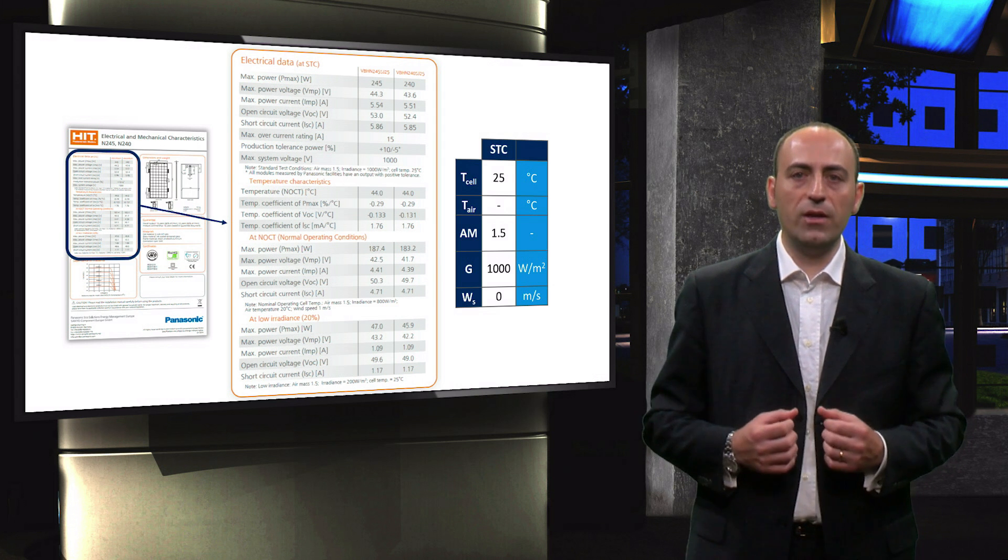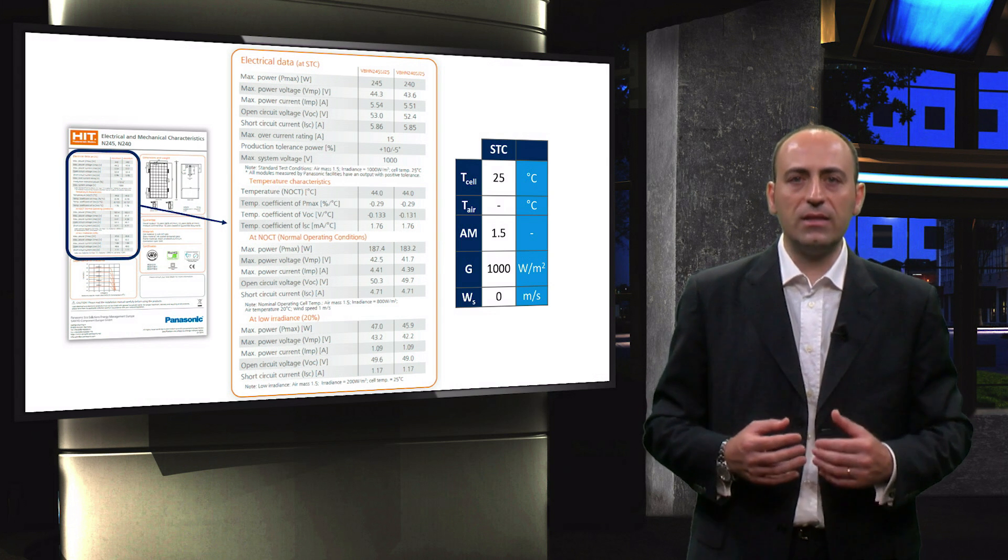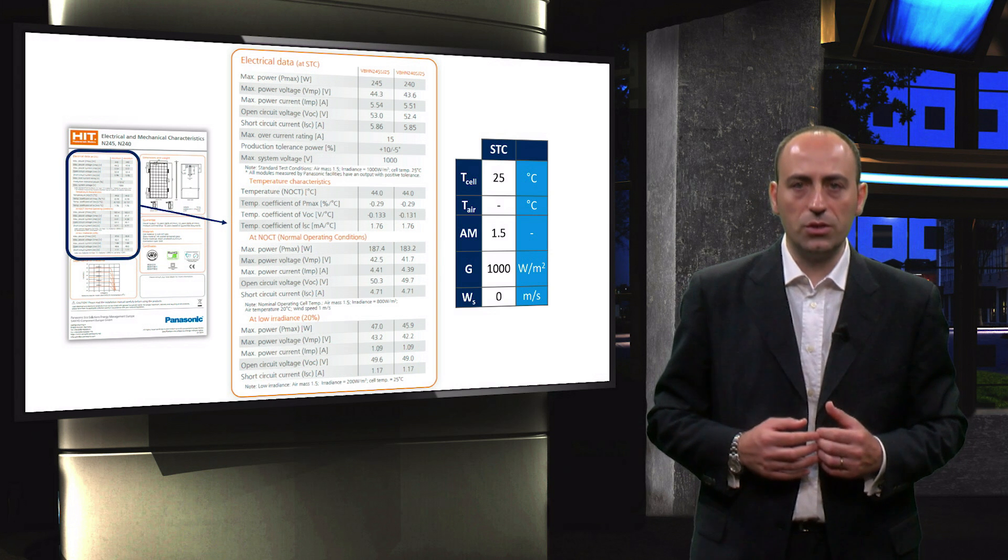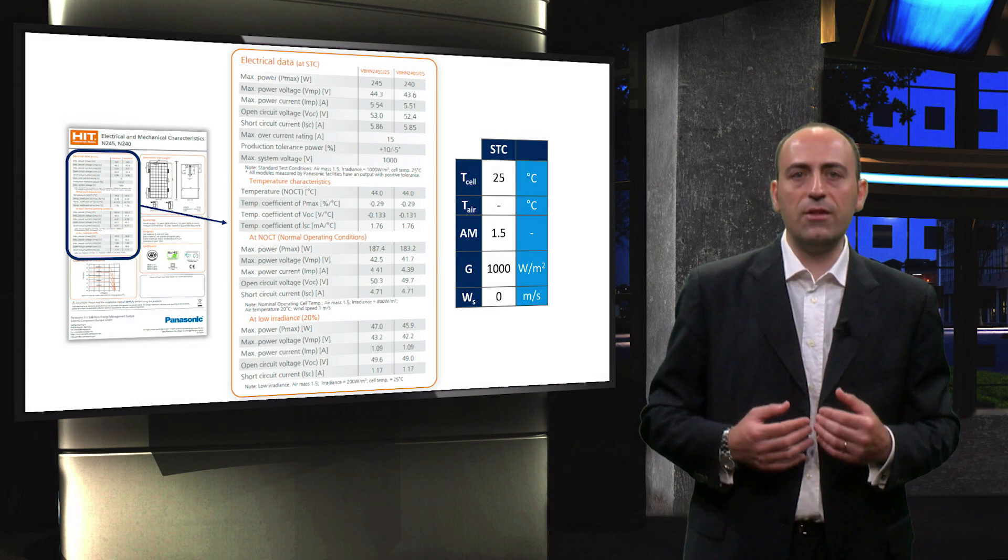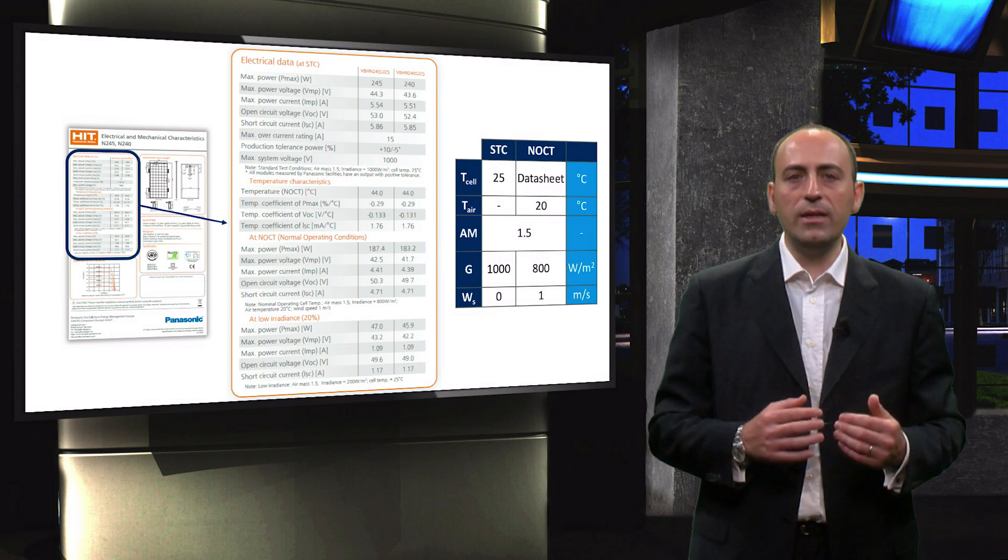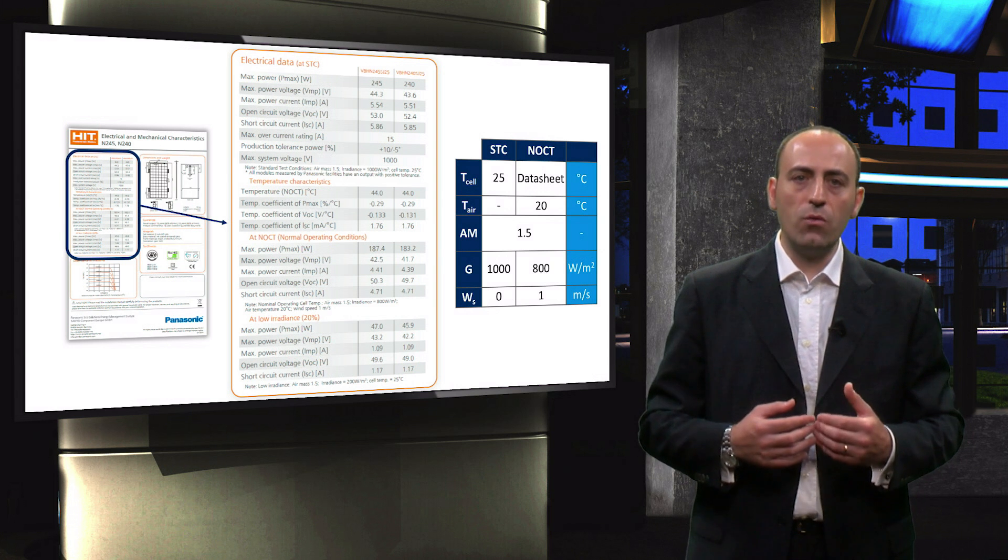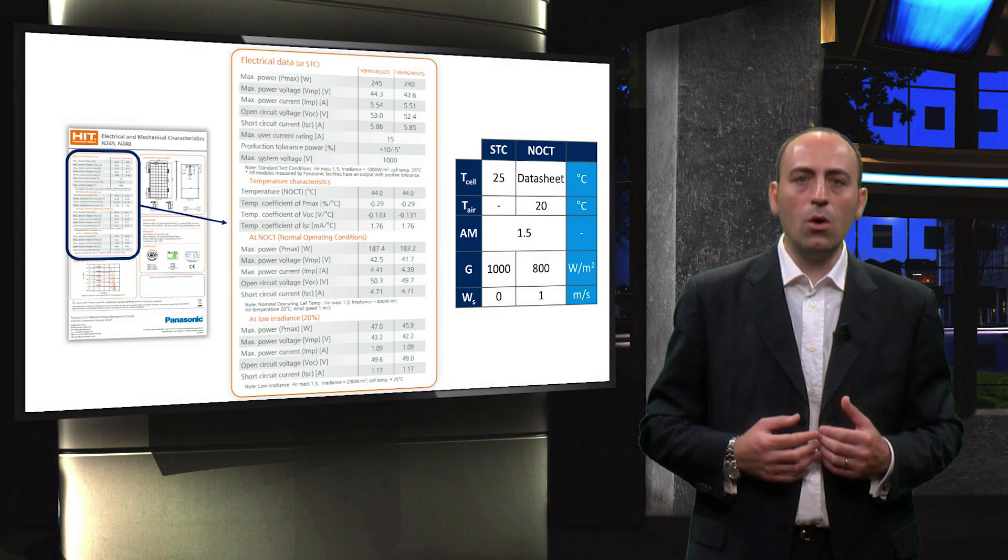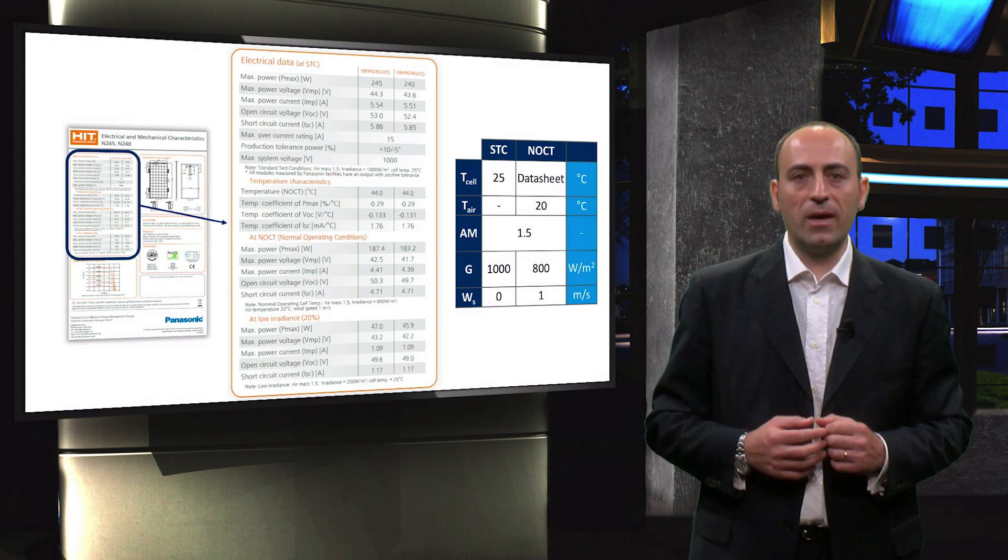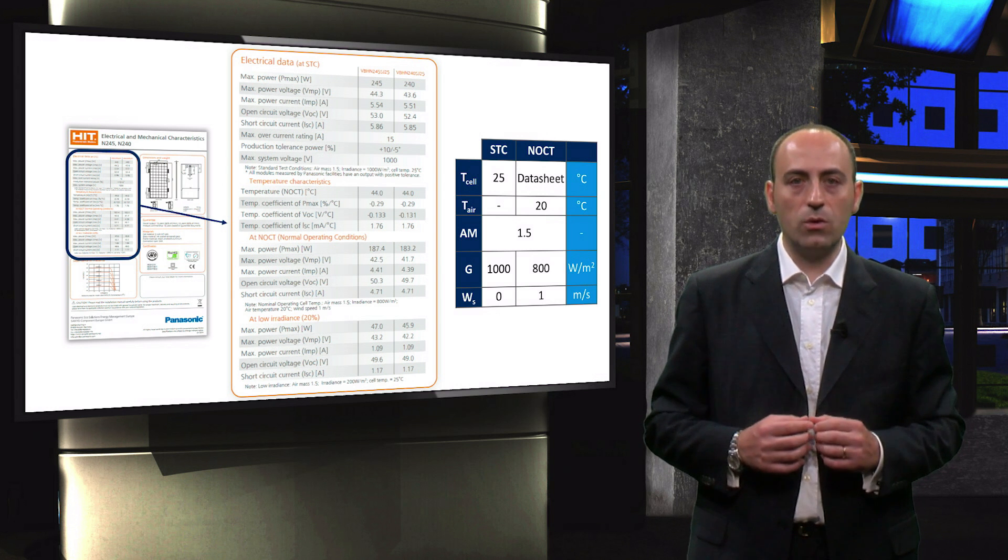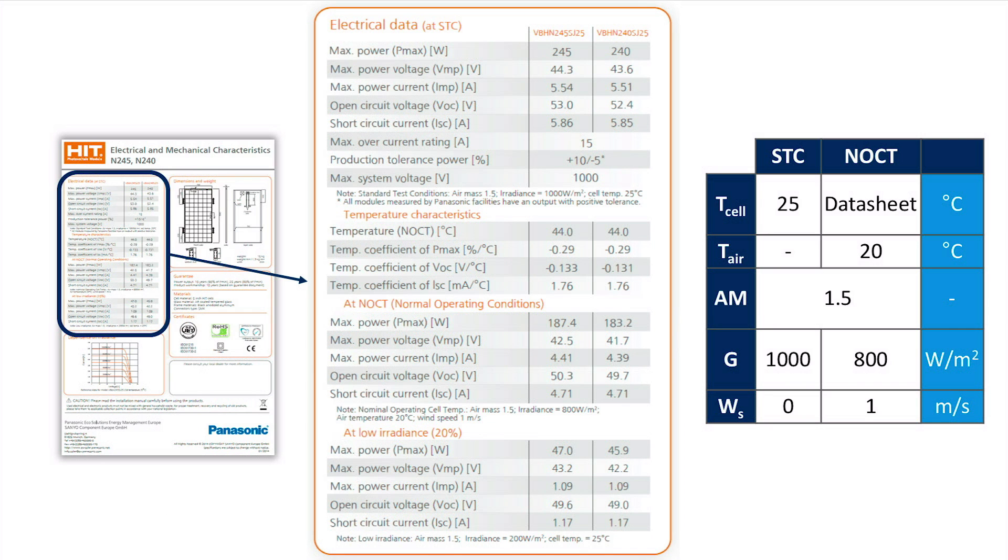However, when PV modules are operating in the field, they are typically at higher temperatures than 25 degrees centigrade and at somewhat lower insulation conditions. Therefore, in order to determine the power output of the solar cell, it is important to first determine the nominal operating cell temperature, or NOCT. This is defined as the temperature reached by open-circuited cells in a module when the air temperature is 20 degrees centigrade, the integral of the solar spectrum AM 1.5 gives 800 W per square meter and wind velocity is 1 meter per second. In this example, the NOCT is 44 degrees centigrade.